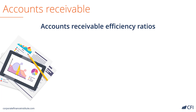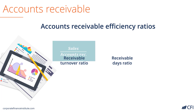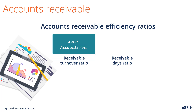There are two ratios related to accounts receivable efficiency: the accounts receivable turnover ratio and the accounts receivable days ratio. The receivable turnover ratio is calculated by taking revenue and dividing it by the accounts receivable ending balance or the accounts receivable average balance on the balance sheet. A higher accounts receivable turnover ratio means a company receives payment for revenue more quickly, and a lower ratio means it's paid more slowly.